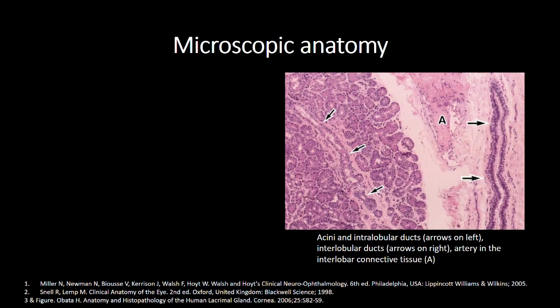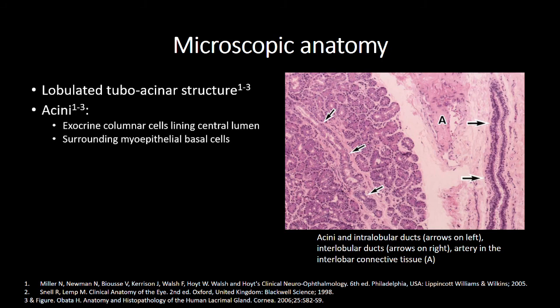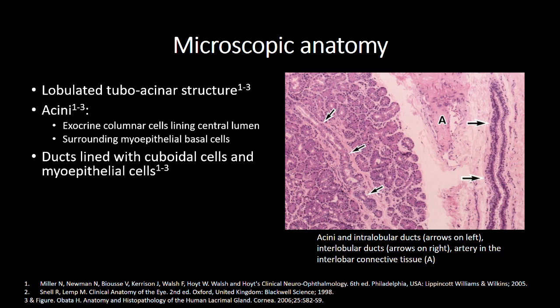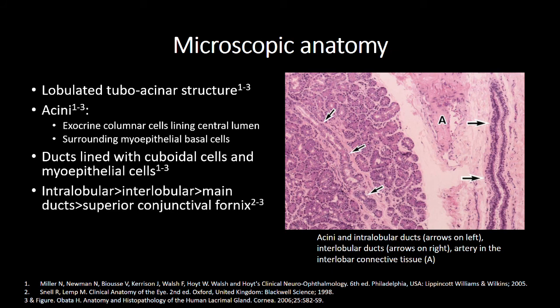As seen in the histological slide on the right, the lacrimal gland has a lobulated tuboacinar structure, with lobules separated by loose connective tissue. The acini consist of exocrine columnar cells lining a central lumen with surrounding myoepithelial basal cells that help expel secretory products into intralobular ducts. The intralobular ducts, lined with cuboidal cells and myoepithelial cells, progressively channel into interlobular ducts, before finally joining the main ducts that empty into the superior conjunctival fornix.